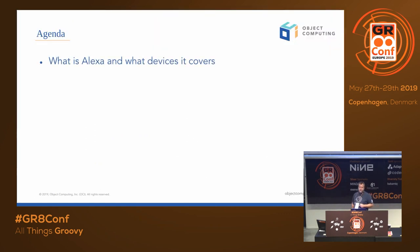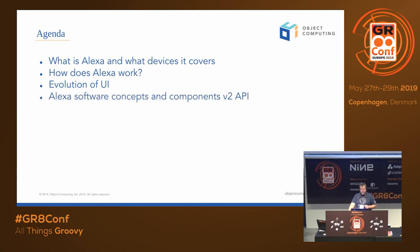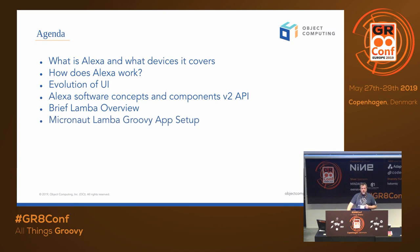What are we going to talk about? What is Alexa? What devices does it cover? We're going to talk about how it works in general, and where things are running. Evolution of UI, how we got there. Alexa software concepts and components. There's a V2 API that Micronaut's using versus the V1 API if you've seen my Grails talk before. We'll talk about Lambdas and a little overview of how we set that up in our Micronaut app.